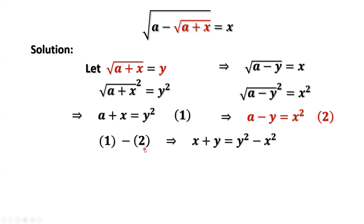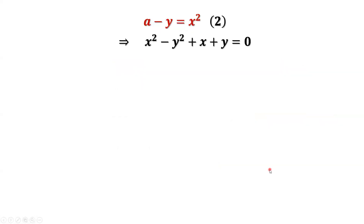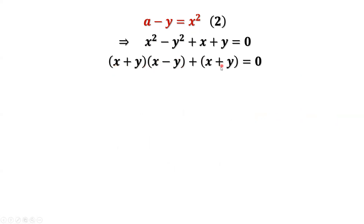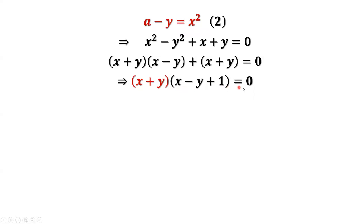Result 1 minus result 2: then we have x plus y equals y squared minus x squared. Moving everything to the left-hand side, we have x squared minus y squared plus x plus y equals 0. Since x squared minus y squared equals x plus y times x minus y, x plus y is the common factor. We can factor x plus y out, giving us x plus y times x minus y plus 1 equals 0.